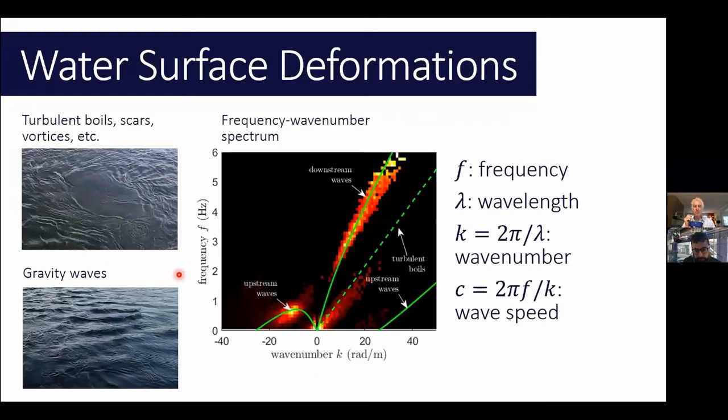We've spent quite a lot of time at Sheffield investigating this kind of phenomena, trying to describe the surface deformations in rivers. Typically we identify two big families of surface deformations. The first group are everything which is created locally by turbulence. We call them turbulent boils, scars, vortices. They can have different shapes but they have in common that they usually represent something which is happening directly beneath them in terms of turbulence.